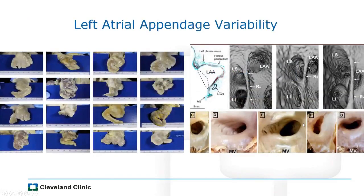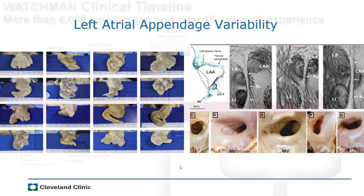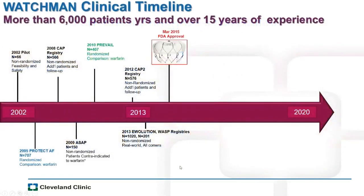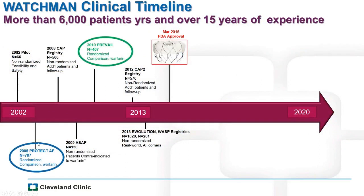Because there are several variations in LAA anatomy and ostial size, devices come in variable sizes. Sometimes you favor one device over another based on the appendage morphology. With the Watchman device, several randomized clinical trials — predominantly the PROTECT AFib and PREVAIL studies, plus continued access protocol studies enrolling several patients — now give us follow-up on more than 6,000 patient-years.